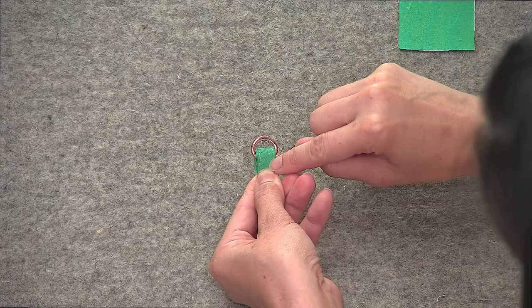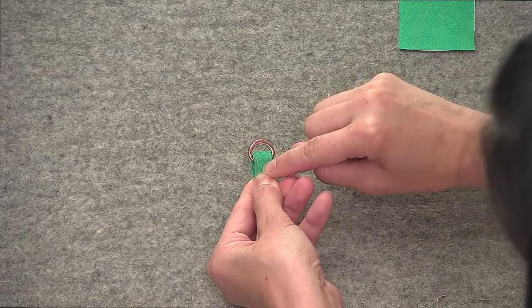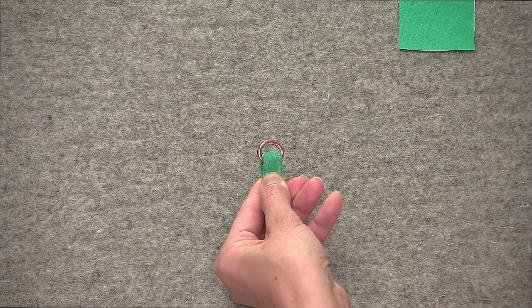So this right here, if you choose to use a rivet without sewing it in place, attach the rivet to the side panel of the bag.